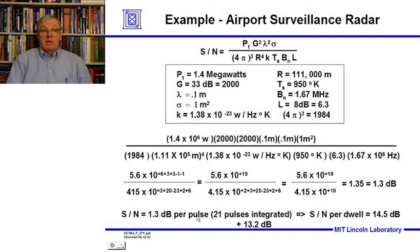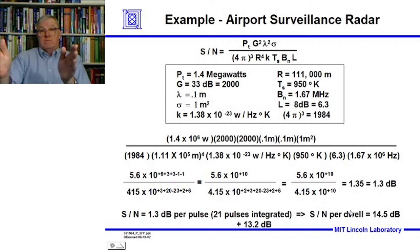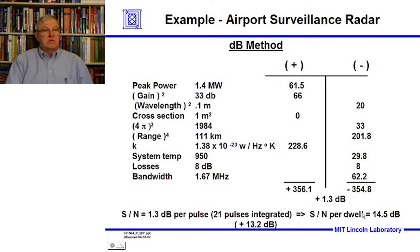Per pulse, we have a signal-to-noise ratio of 1.3 dB. With 21 pulses coherently integrated, the integration gain is 10 times log base 10 of 21, which is 13.2 dB. Adding that gives a total signal-to-noise ratio of 14.5 dB for all 21 pulses — a good signal-to-noise ratio well above the noise with good detectability.